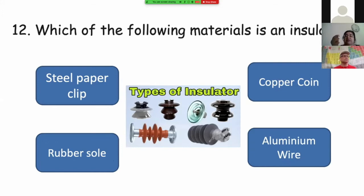Well, we need a battery that consists of some insulators and some conductors. What is an insulator in these options? Which one of them is an insulator? A steel paper clip? Is it an insulator? A copper coin? Is it an insulator? A rubber sole? Or an aluminum wire? Which one is an insulator?